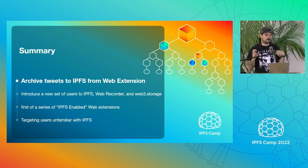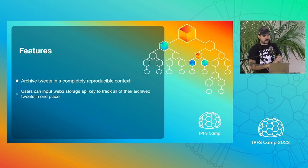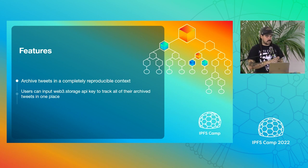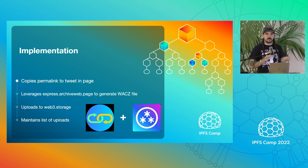This will be the first in a series of IPFS-enabled extensions — some super simple like this and some getting more complicated with peer-to-peer stuff, maybe audio/video recording. For this one specifically, we're targeting end users not familiar with IPFS. The features: we archive a tweet in a completely reproducible context — the WACZ file — and users can input their Web3.Storage API keys to track all their archives in one place. Implementation-wise, we mostly rely on ILIO: we copy the permalink out of the page, put a button in so you can pick which tweet to archive, open a new tab to Archive Web Express, let it generate the WACZ file, then upload it to Web3.Storage. It's a very lightweight extension.